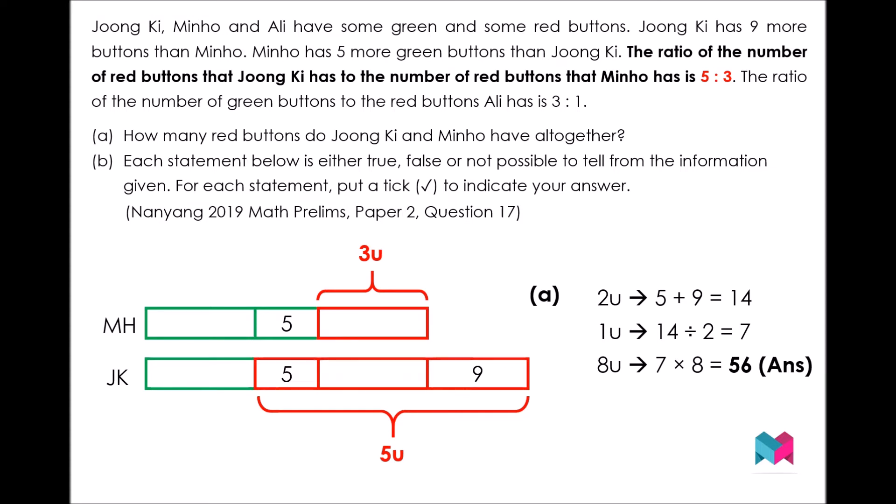This means that the difference of two units must be equal to 14 buttons. We then divide 14 by 2 to find the value of one unit, which is 7. Then we multiply 7 by 8 to find out the total number of red buttons that Jungki and Minho have altogether, which is 56 — that is the answer for part A.